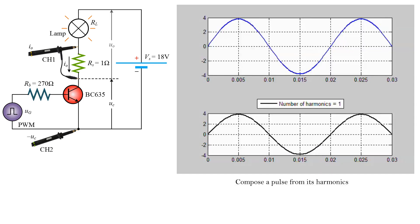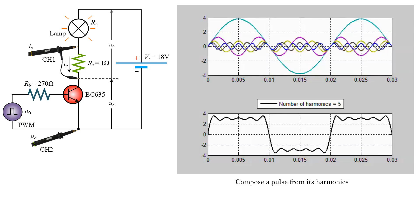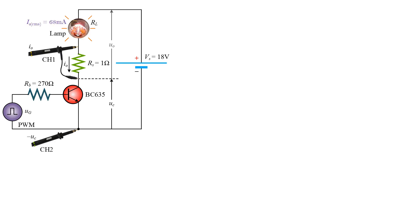The disadvantage of using switches in power converters is the appearance of harmonics. As a result, the transistor consumes reactive power.